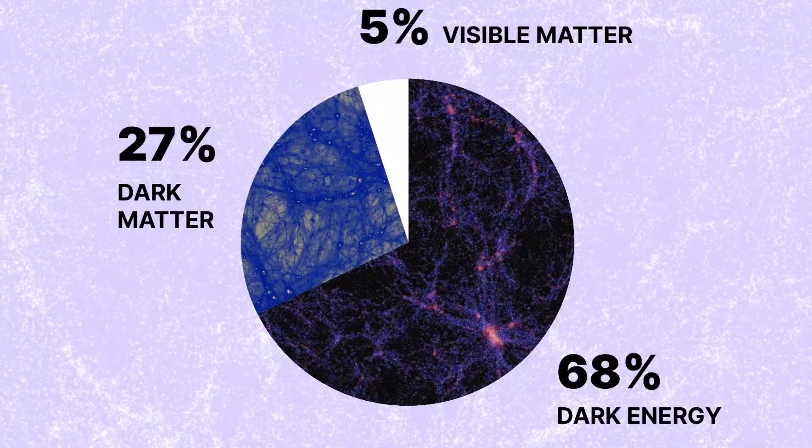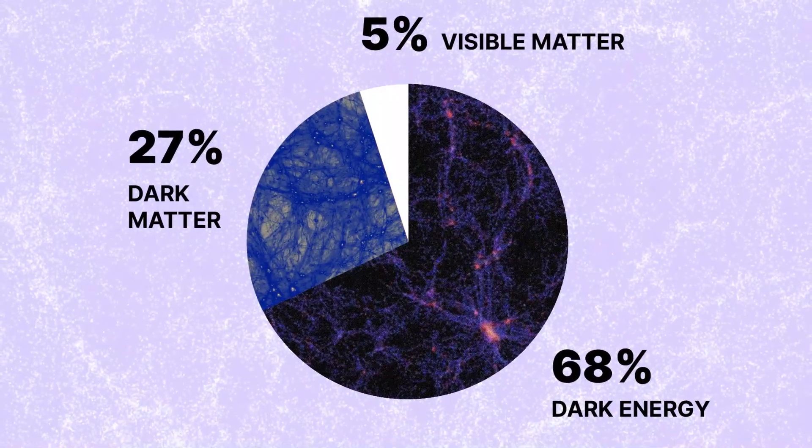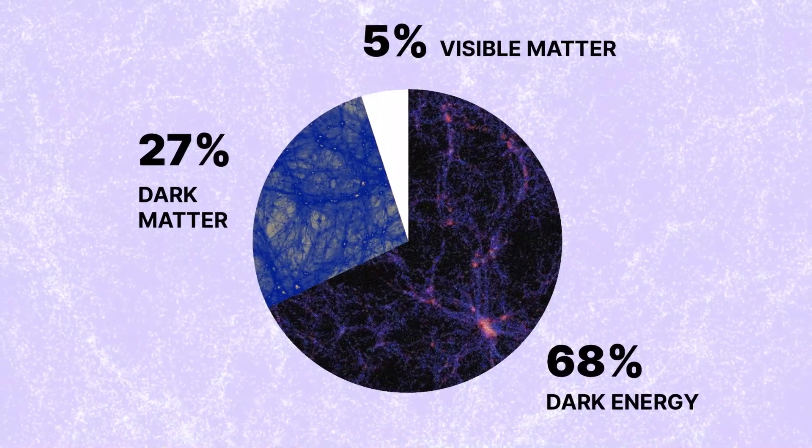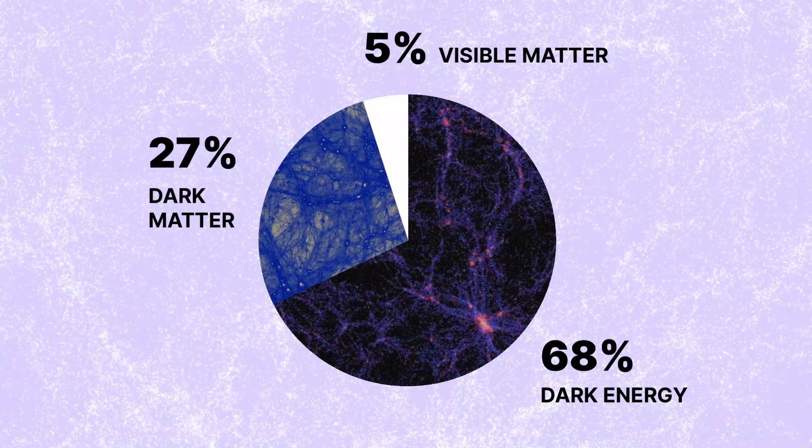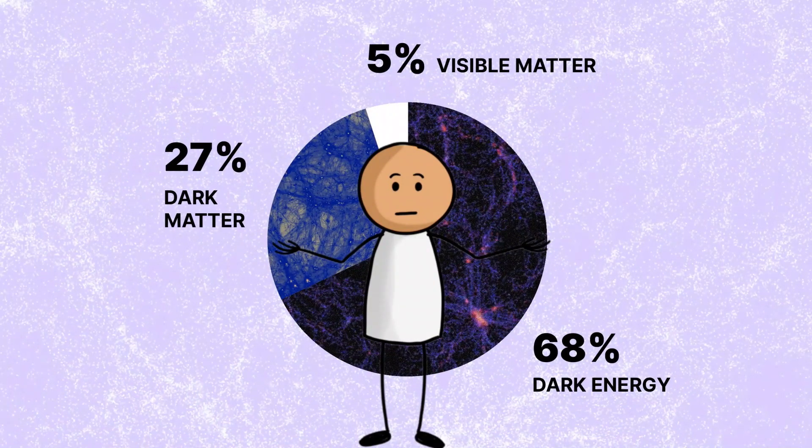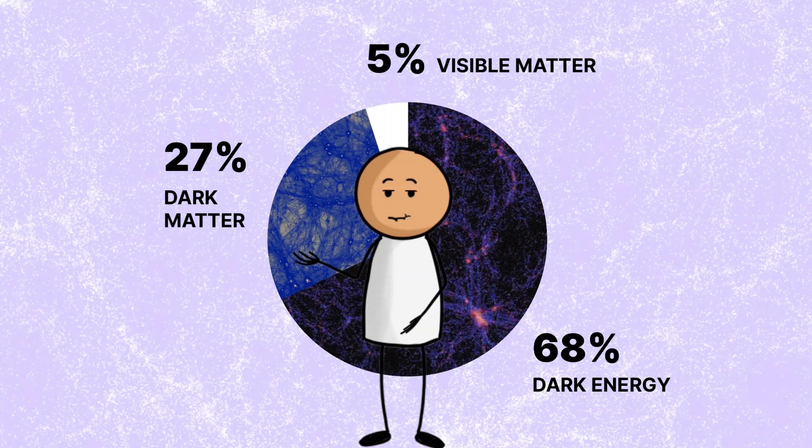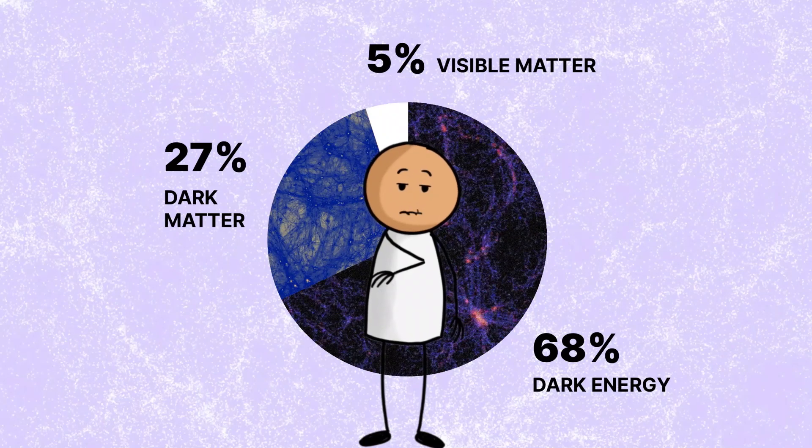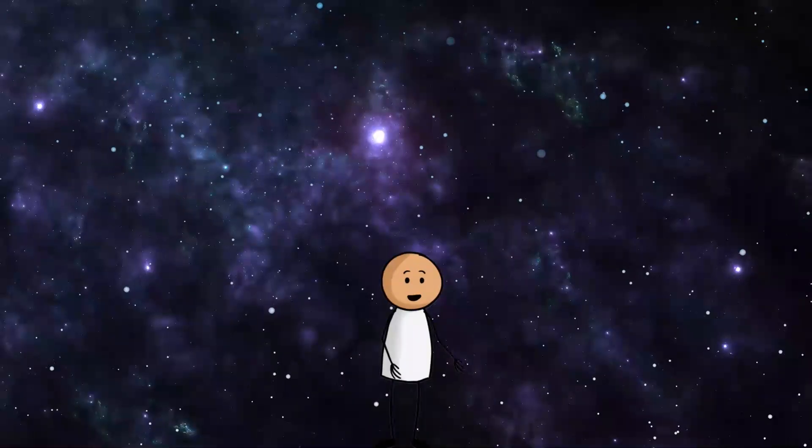Dark energy makes up about 68% of the universe. That means it is even more abundant than dark matter. And that is saying something, because dark matter is already a big deal. So right now, about 95% of the universe is made of stuff we cannot see or fully understand. Talk about feeling small.